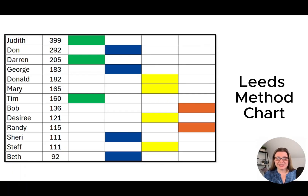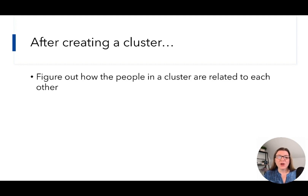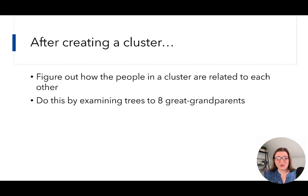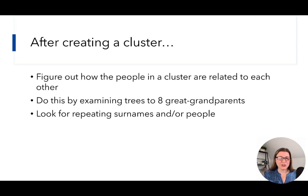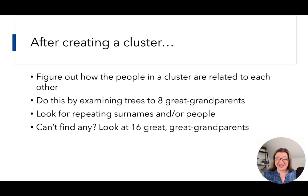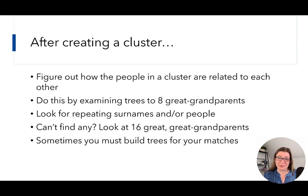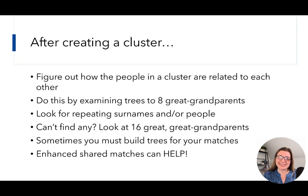After creating a Leads Method chart like this, you'll have different color clusters. We're going to work with each cluster one at a time. Within each color cluster, we're going to figure out how the people in that cluster are related to each other, and we'll do this by examining trees. We're going to look at trees they do have and gather up to their eight great-grandparent surnames, then look for repeating surnames or even repeating people within that cluster. If you can't find any, you can go back another generation and look at the 16 great-great-grandparents. Sometimes you've got to build trees for the people — maybe they have very small trees or no trees at all. This is where AncestryDNA's Enhanced Shared Matches or the Shared Matches Pro tool can really help.